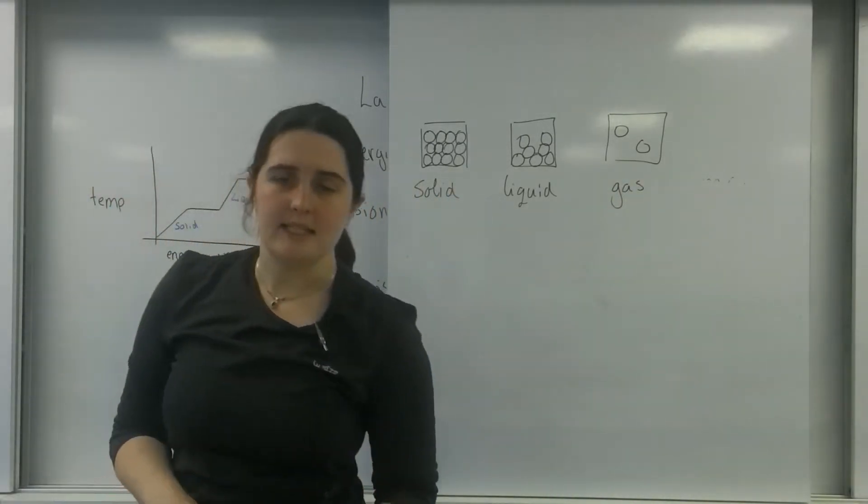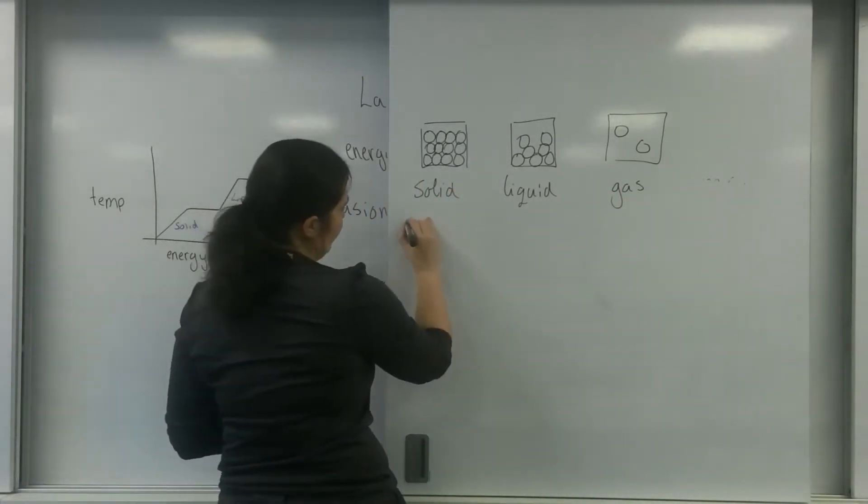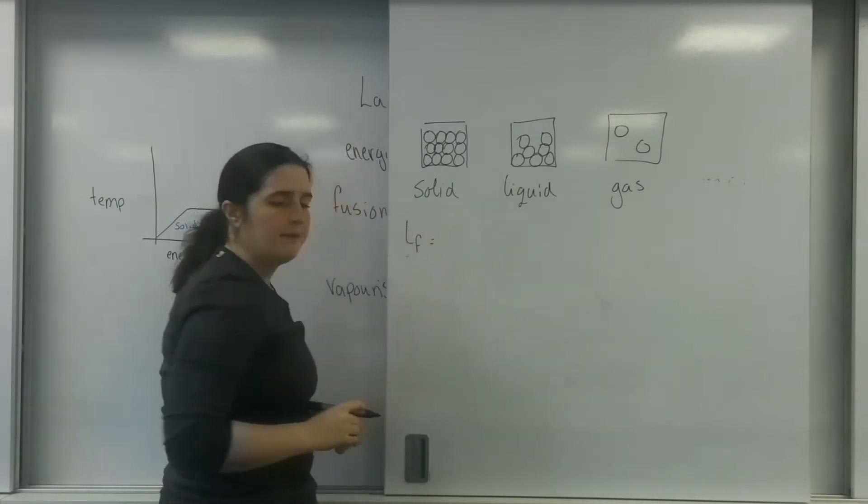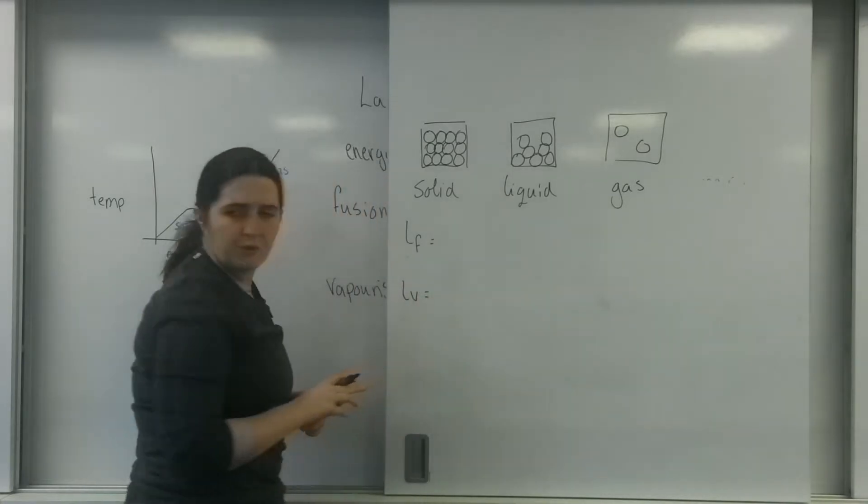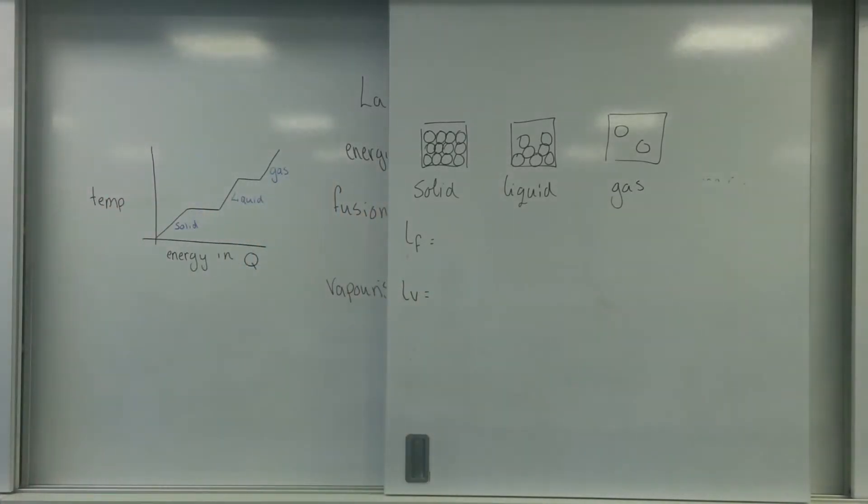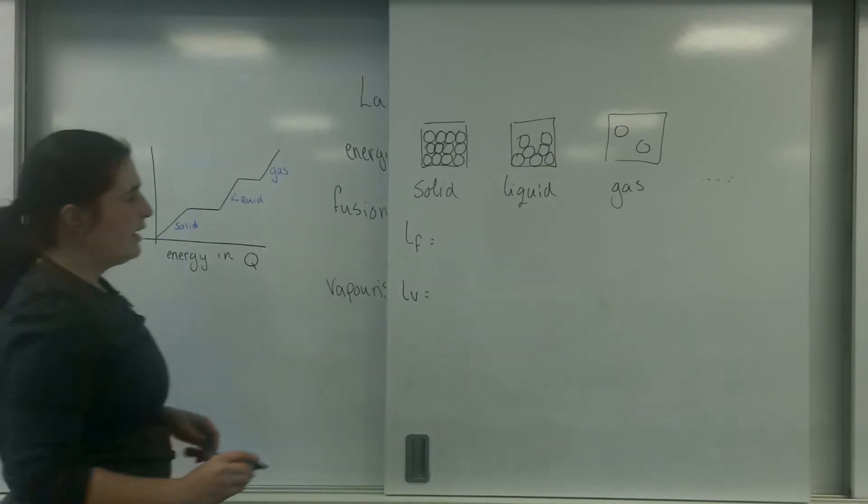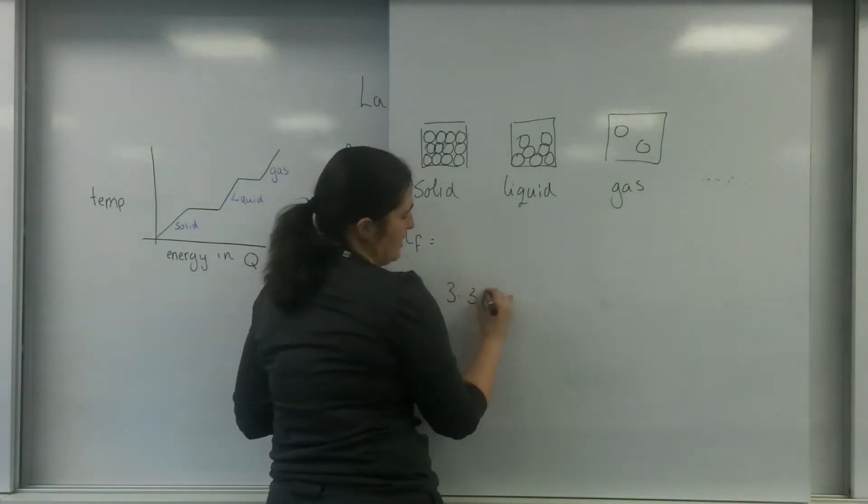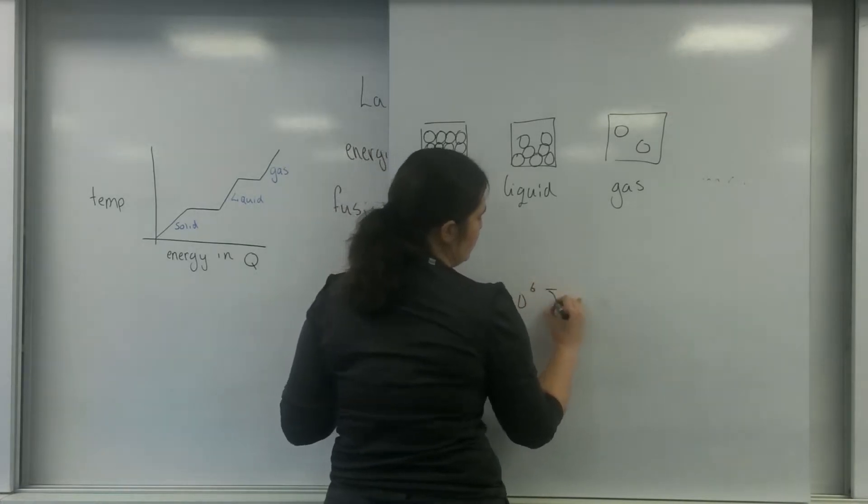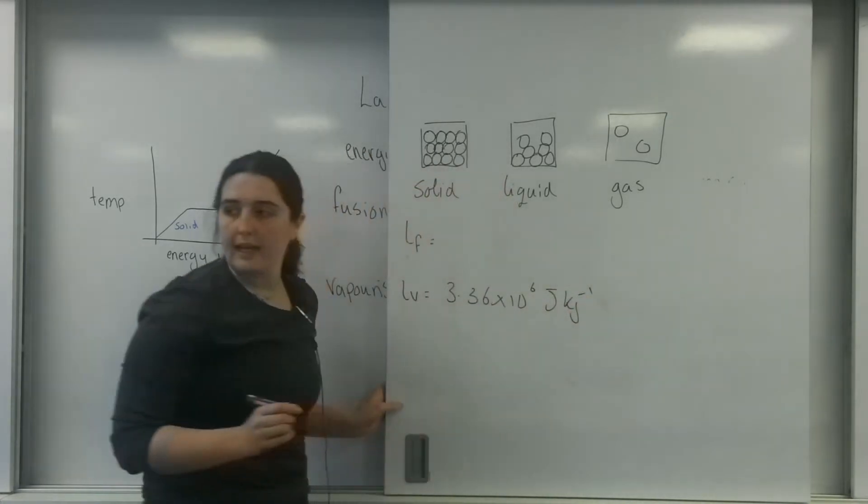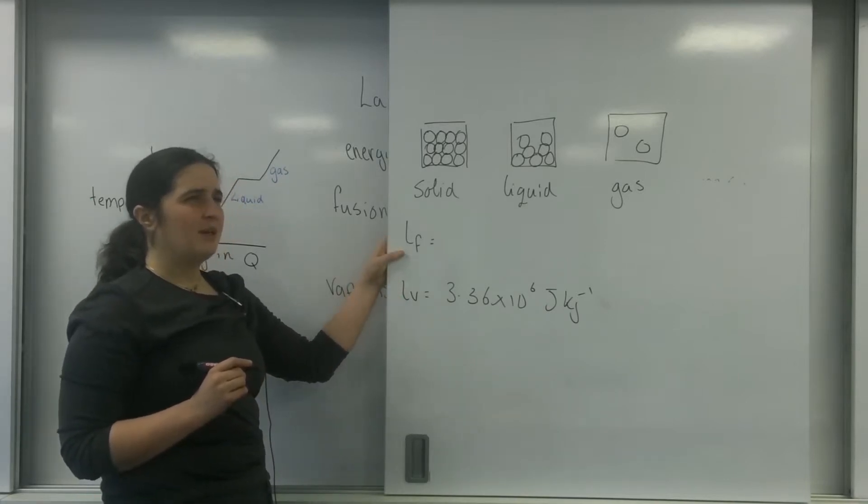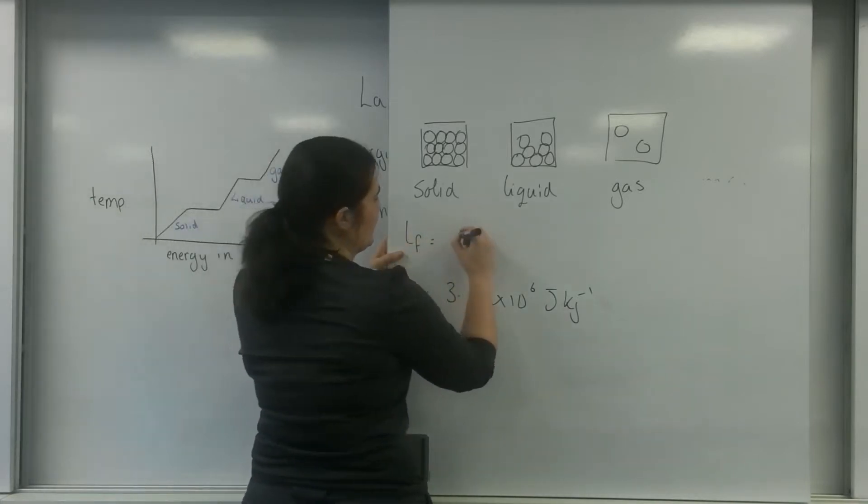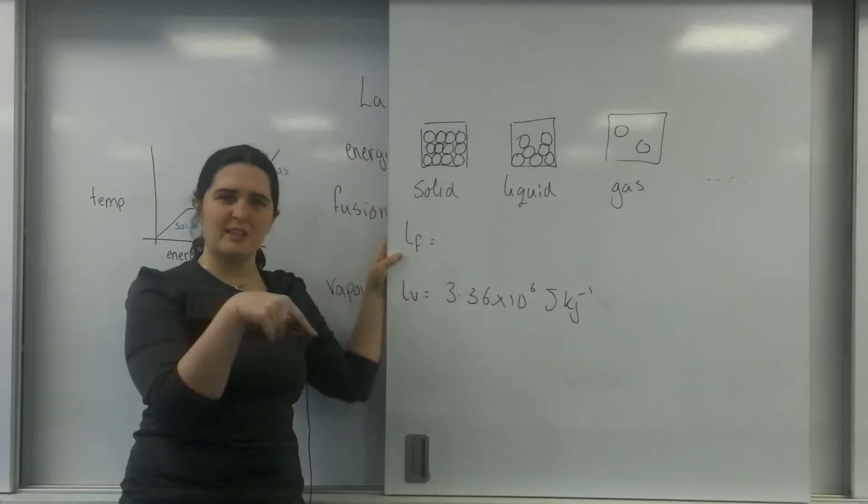And what it actually is, is that latent heat of fusion and the latent heat of vaporisation. So if I can remember the ones for water, just give me two seconds, I'll just get the ones for water for you. I believe that is 3.36 times 10 to the 6 joules per kilogram. I believe this is very low. I'm not 100% sure. I'll find out here. I'll put it into the comments box below.